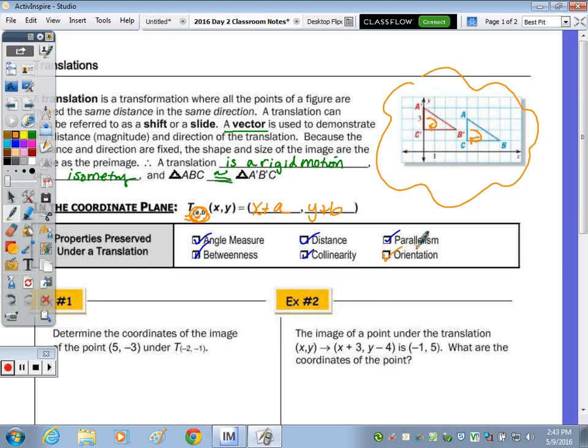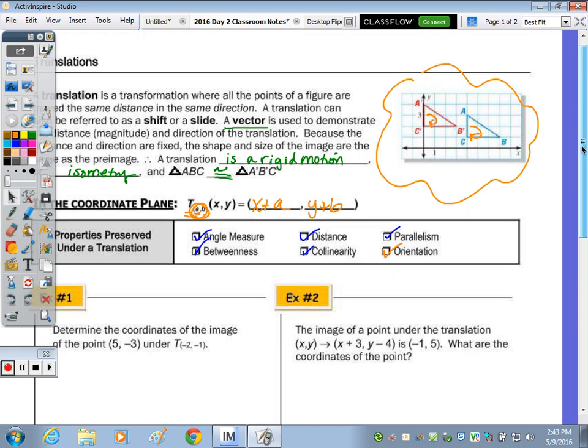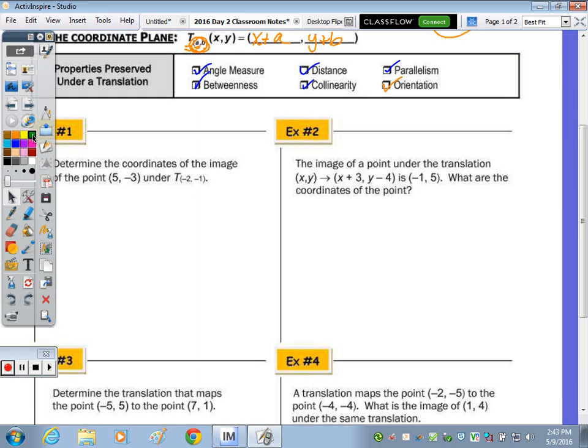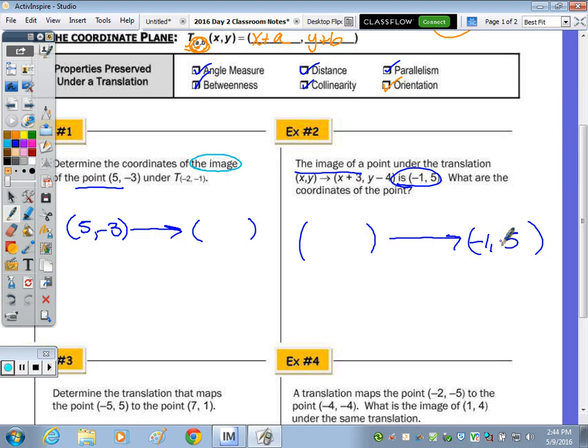Go ahead and just quickly read one and two, and I want to point out the big difference between the two. So number one, this says determine the image. We're looking for the image. So that means I started with the point (5, -3), and then went to what point? Over here, it says the image of a point is. So I'm looking for that starting point in knowing that the image is (-1, 5). So you really need to be careful and pay close attention to what point you're finding.